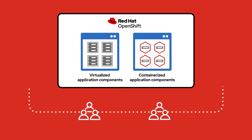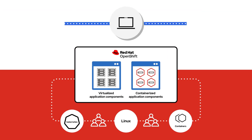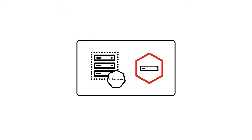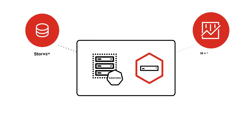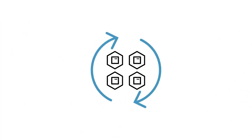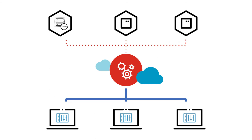Powered by the open source communities behind Kubernetes, Linux, and containers, and delivered by Red Hat, the world's enterprise open source leader, OpenShift Virtualization puts developers in full control. Virtual machines become native Kubernetes objects and can be managed and deployed just like containers. Since the resulting virtual machines are native Kubernetes objects, you use the same CI-CD lifecycle and the same cloud-native scaling and load balancing of Kubernetes, all driven by application owners.